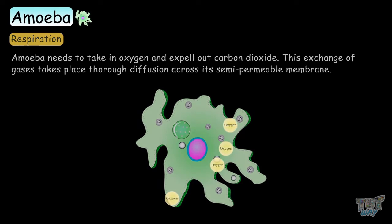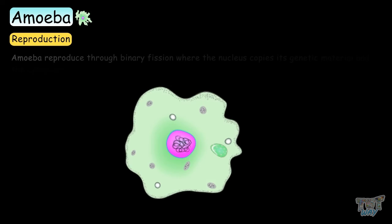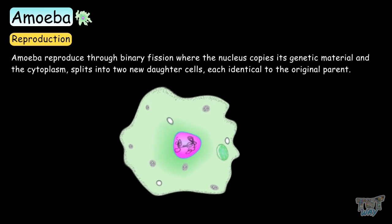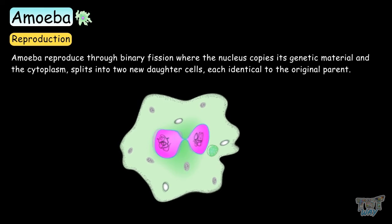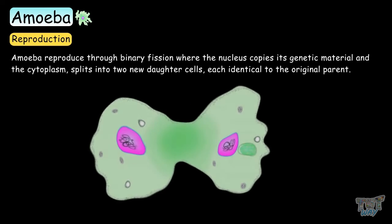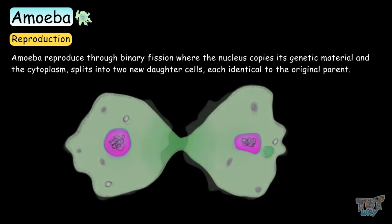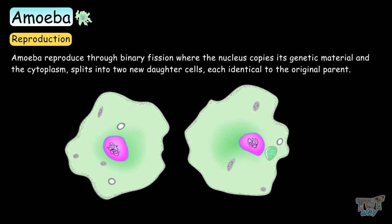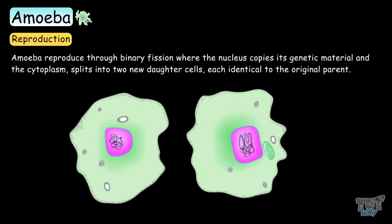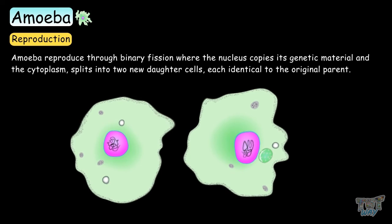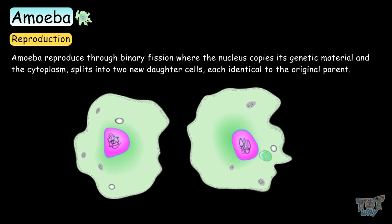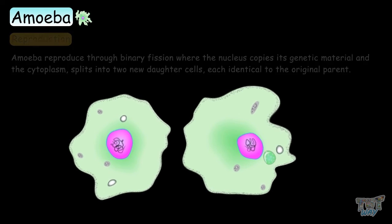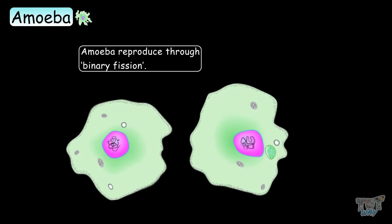Let's learn how amoeba reproduce. Amoeba reproduce through a process called binary fission. In this process, the nucleus copies its genetic material and the cytoplasm splits into two new daughter cells, each identical to the original parent. We will learn more about binary fission in higher grades, but for now we just need to remember that the amoeba reproduces through binary fission.